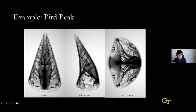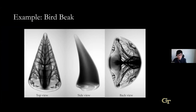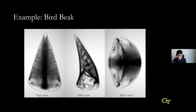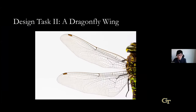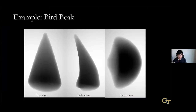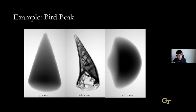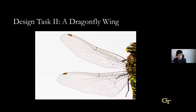These are the structures we can generate from topology optimization using our sparse grid structure. That's the first example.